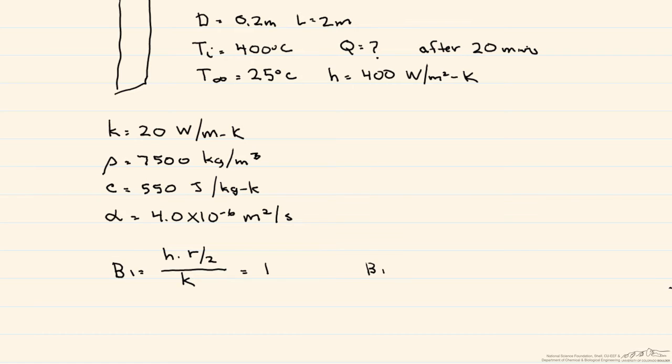We need that our Bi number is less than 0.1, so we're going to have to use the radial system with convection, which takes into account spatial effects in transient conduction.